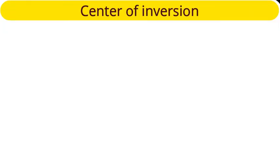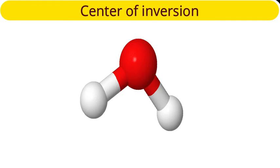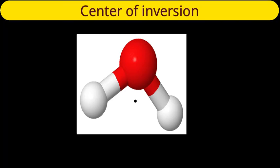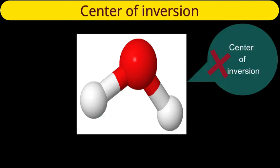Let us discuss a few molecules to test for the existence of center of inversion. First, the water molecule: a triangle is formed by oxygen and two hydrogens, and the center of that triangle is the center of the molecule. If we take a hydrogen atom, draw a line to the center, and extend it to the same extent, we do not get the other hydrogen. So there is no center of symmetry in water.